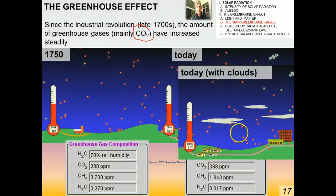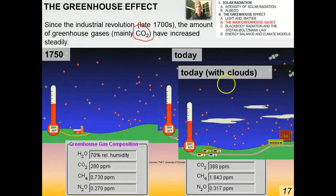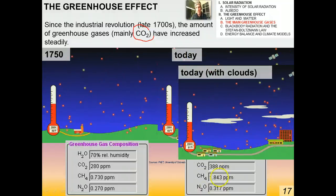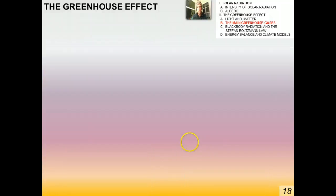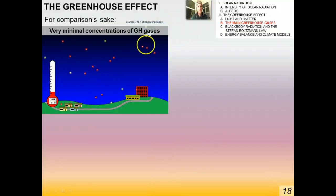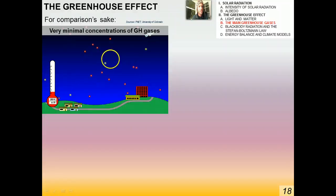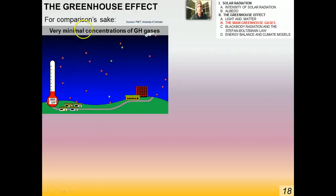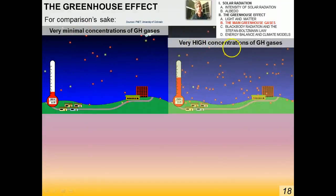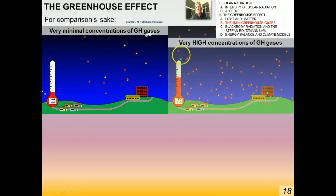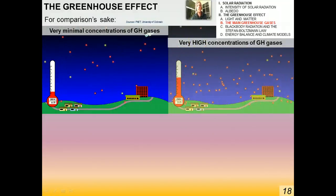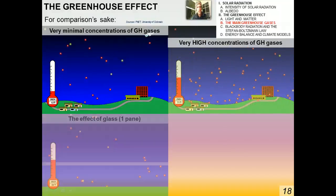Clouds have a big effect as well. If you add clouds into the mix with today's elevated greenhouse gas levels, you can see that the effect of clouds tends to lower the temperature on the planet. For comparison, here are some very minimal concentrations of greenhouse gases — I've turned them way down in the simulation. Look how cold the Earth is: 260 K on average. That would be really unpleasant to live in. Now at very, very high concentrations — with the scale maxed out — look how high the temperature is. We shouldn't mess with it; we should keep it the way it is because that's what human beings have grown accustomed to.